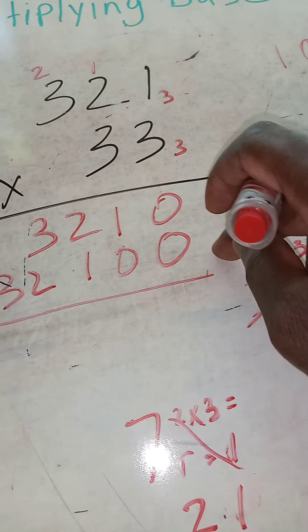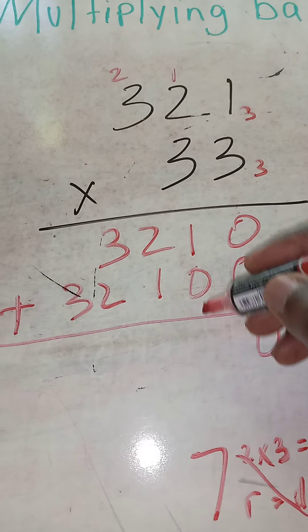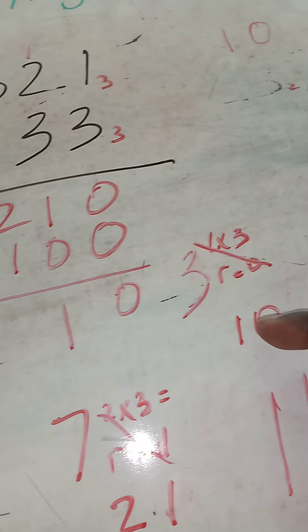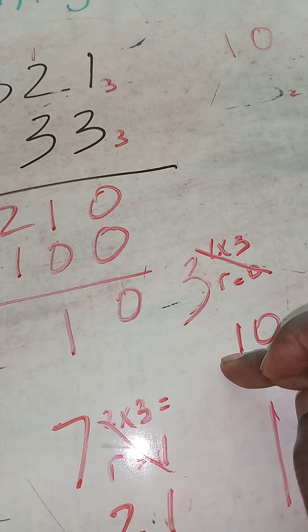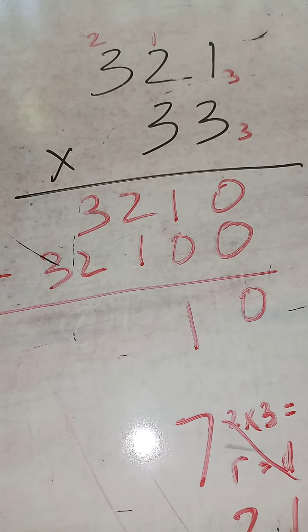0 plus 0 is 0. 1 plus 2 plus 1 equals 3. We can't write 3. Remember 3 is 1 and 0: 1 times 3 plus 0 equals 3. So we'll put the 0, carry the 1.